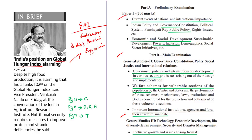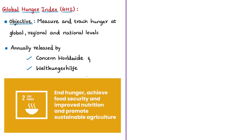Hunger is understood as the distress associated with insufficient caloric intake. The Global Hunger Index is designed to comprehensively measure and track hunger at global, regional, and national levels. Scores are calculated each year to assess progress in combating hunger. It raises awareness, helps countries compare hunger levels, and calls attention to areas where hunger is highest. It is an annual report jointly released by Concern Worldwide, an Irish aid agency, and Welthungerhilfe, a German charity.